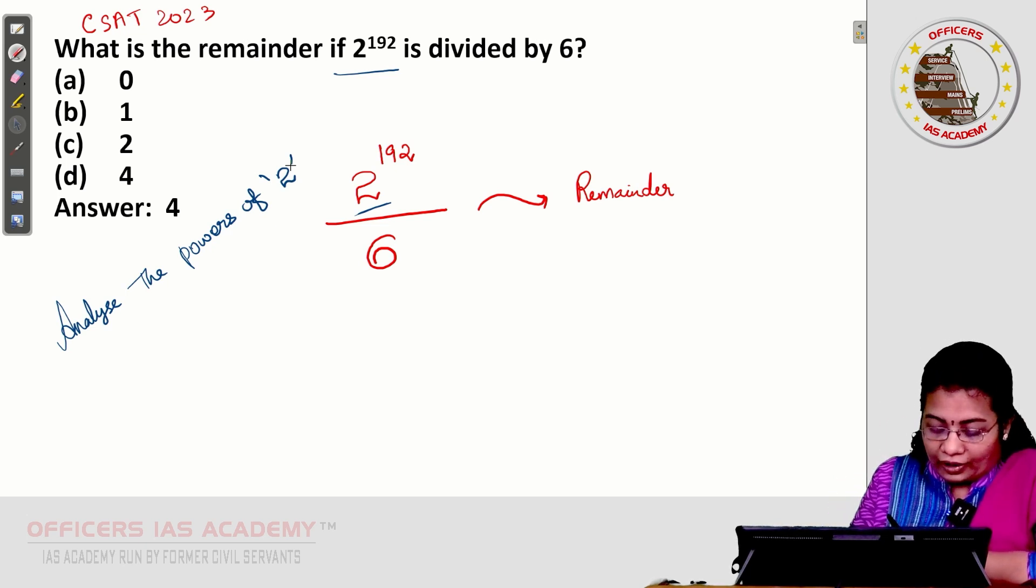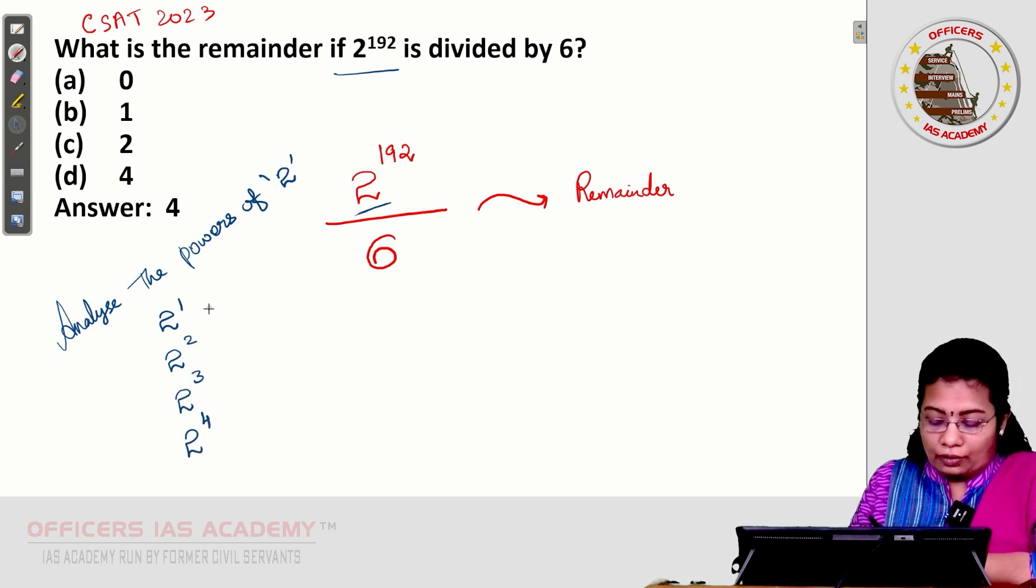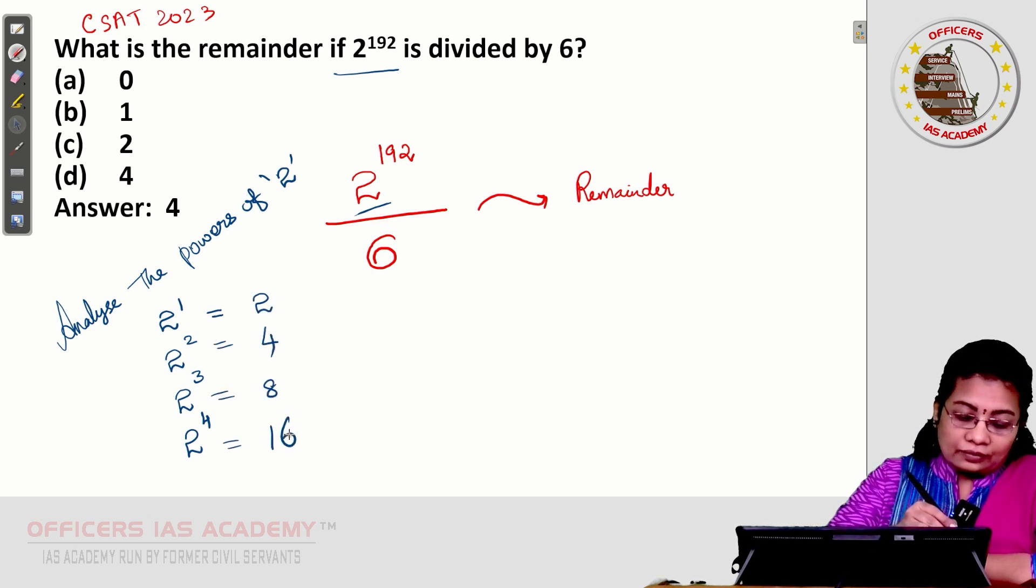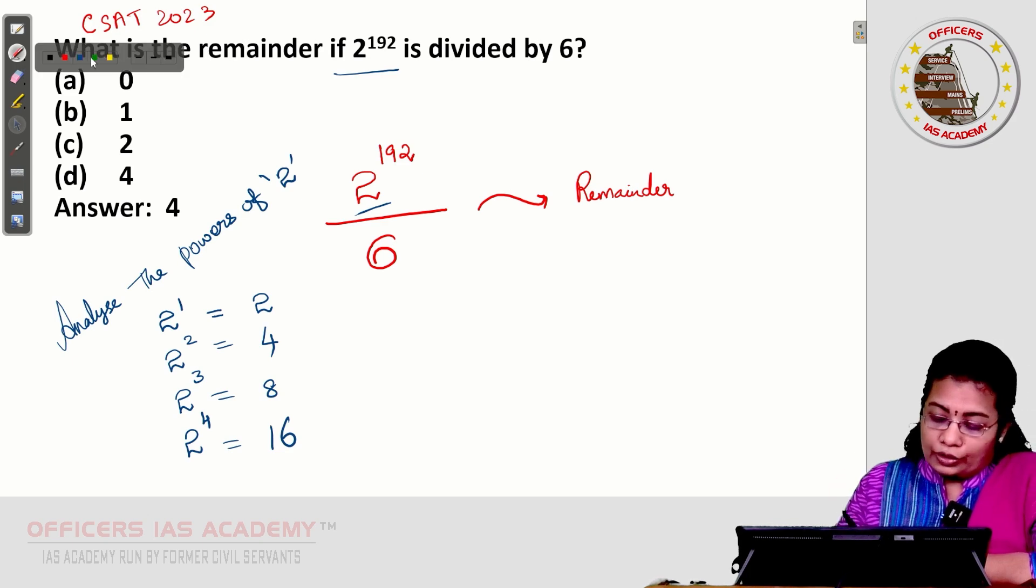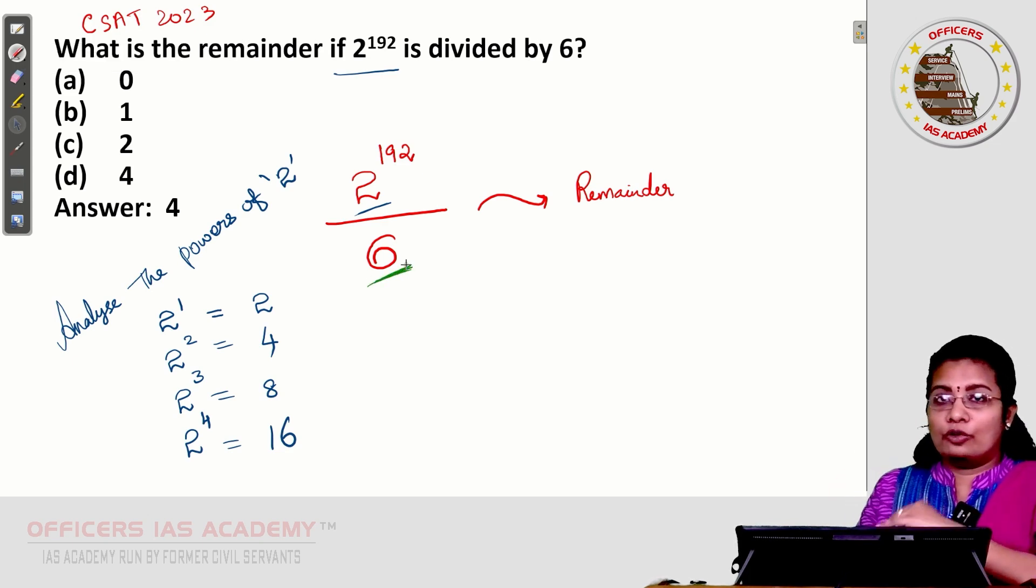2 power 1 is the starting power. From that, I am starting. Value of 2 power 1 is 2, 2 power 2 is 4, 2 power 3 is 8, 2 power 4 is 16. These values to be divided by 6 to get the pattern.